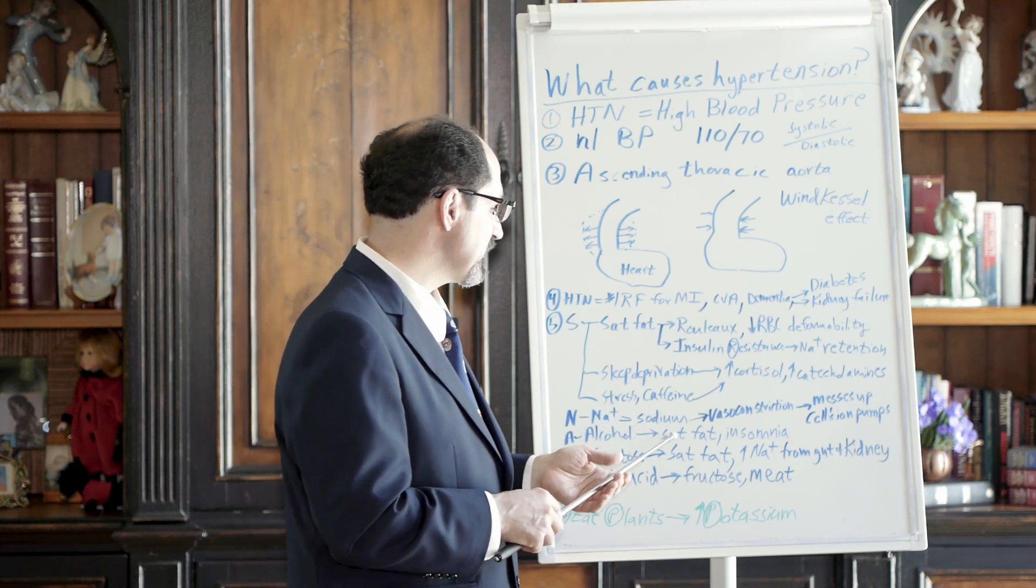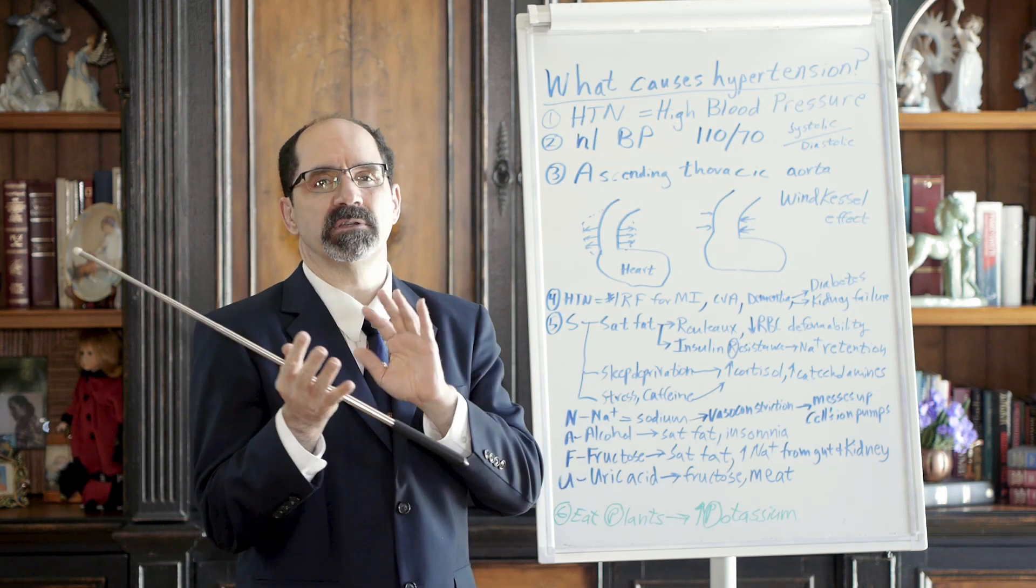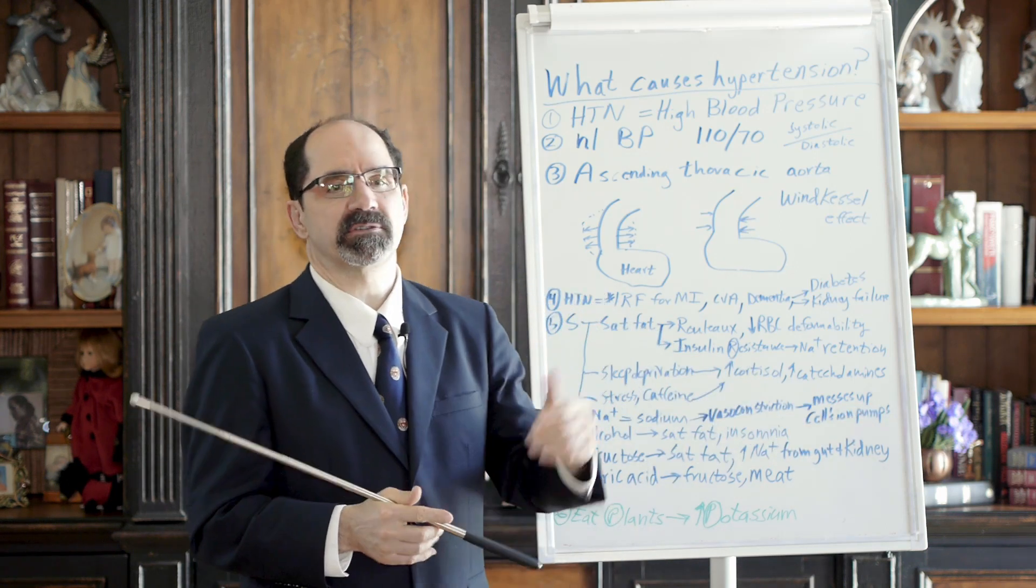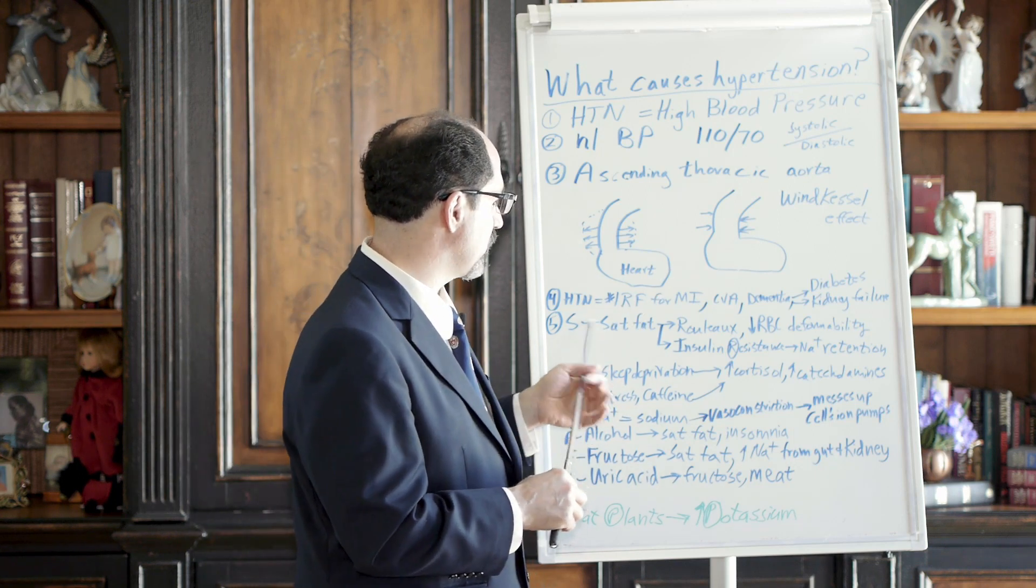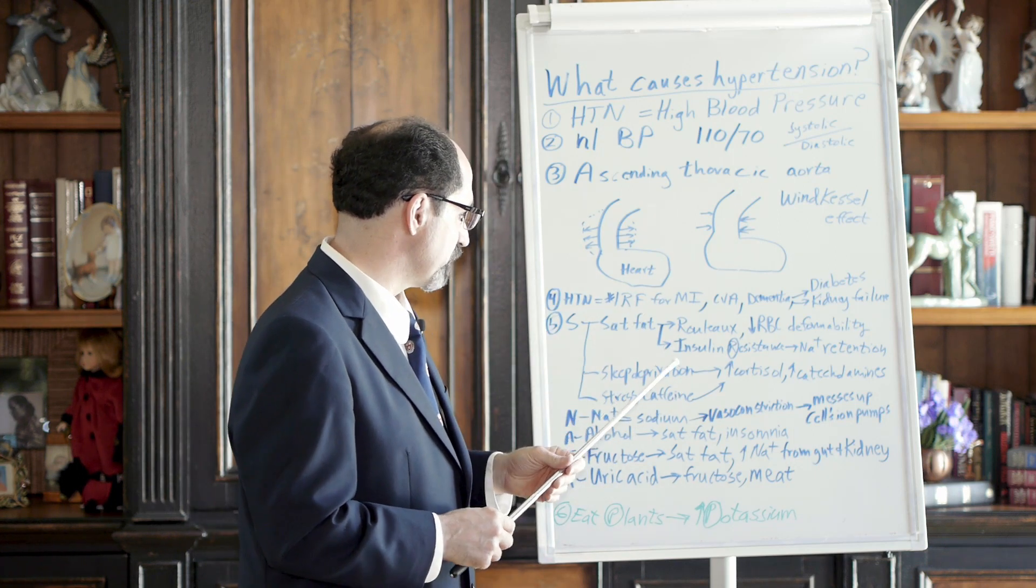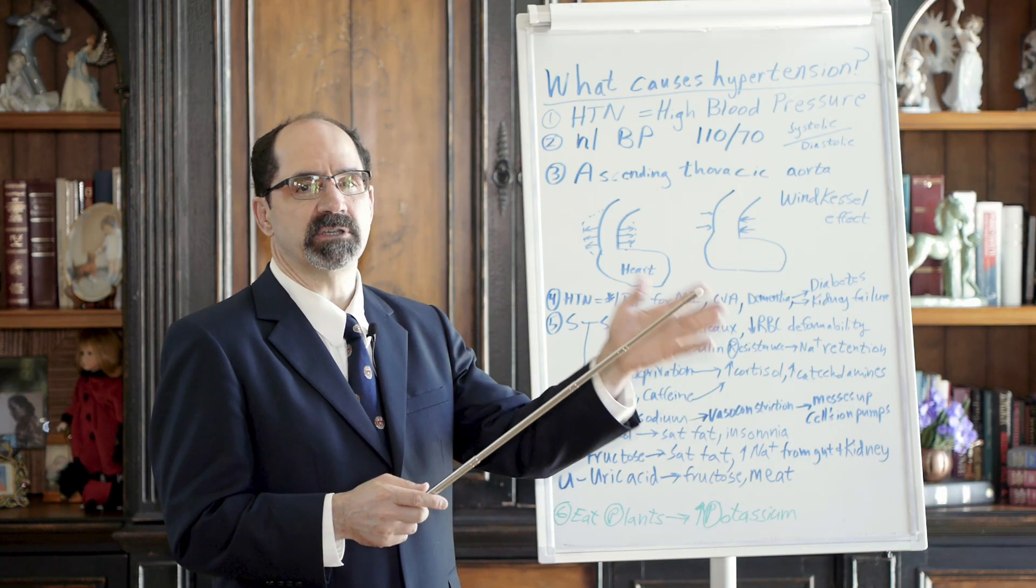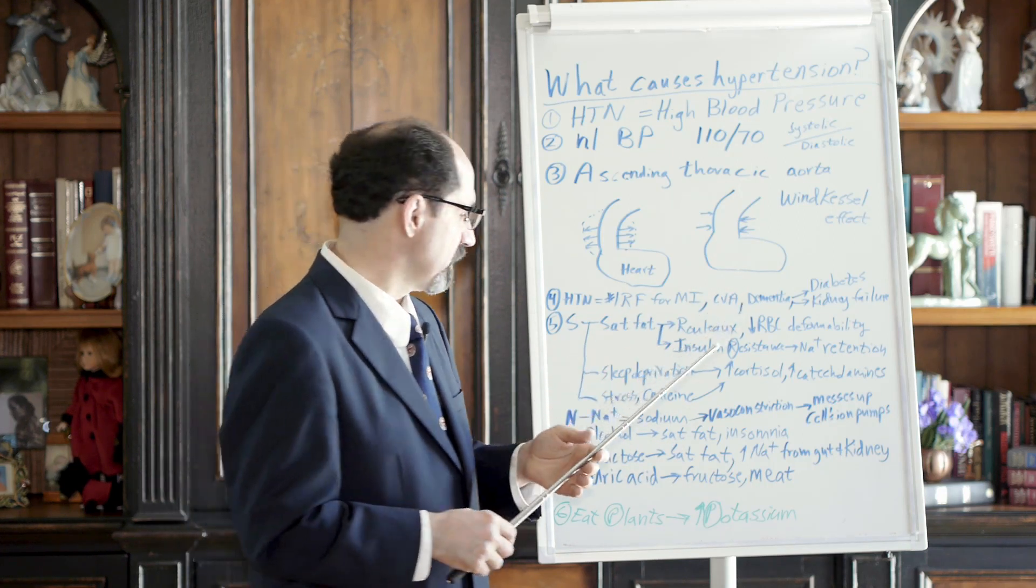Alcohol is a problem because alcohol, two carbon units, ethanol, ethyl alcohol, they go right into the liver. The liver makes them into saturated fat. The saturated fat then does the same thing that it does when it comes from meat, drives up your blood pressure. The most common saturated fat made in the liver is like palmitate, palmitic acid, C16O, 16 carbons with no double bonds.